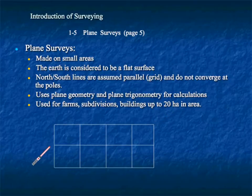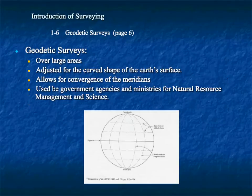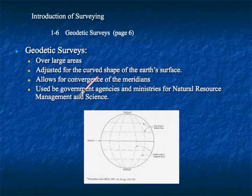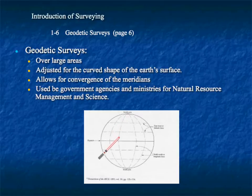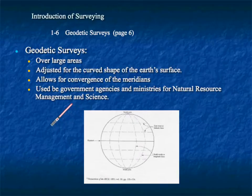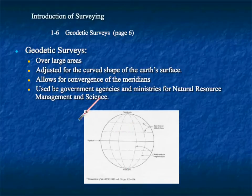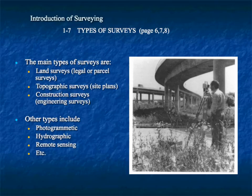Geodetic surveys cover larger areas and make adjustments for the curved shape of the earth. You know how we have zones — zone 17 for where we're located — this is all to respect the curvature of the earth. It understands the convergence of the meridians, acknowledging that the world is round. That's called geodetic surveying.